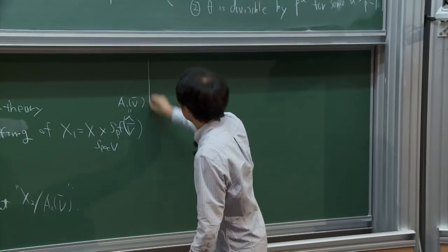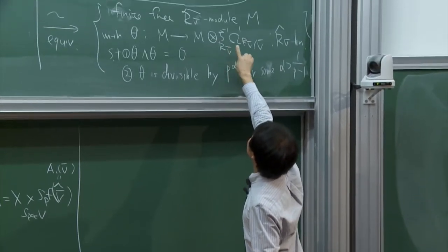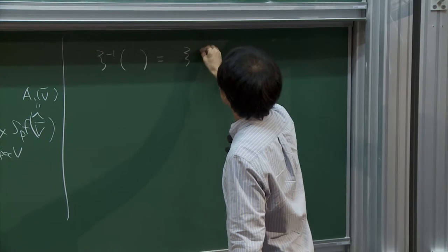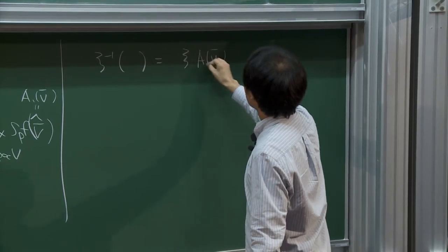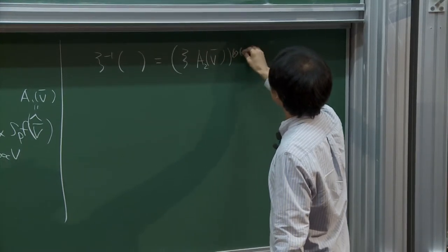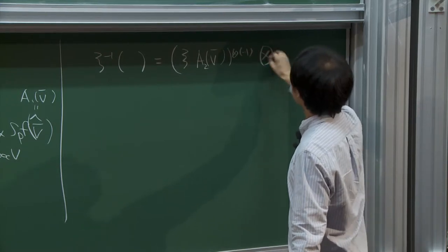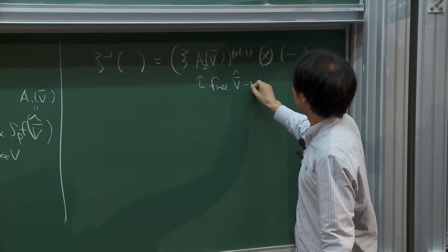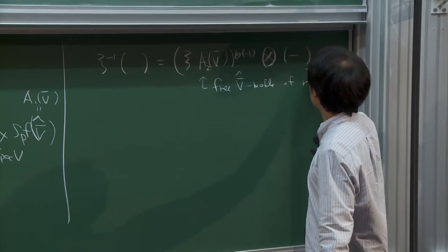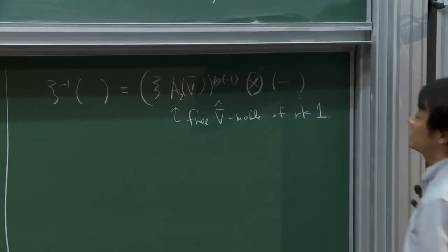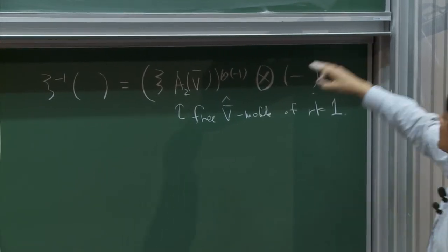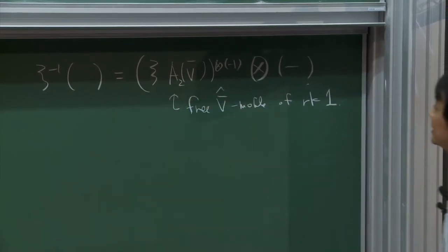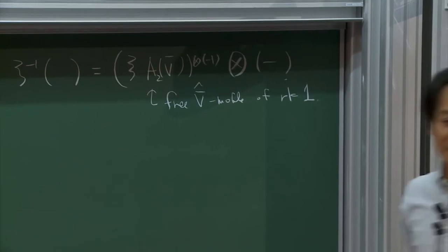I forgot to give a definition of ξ⁻¹. This is just the Tate twist — an inverse of ξ transferred to something. This is a free V-bar-hat module of rank one, just a normalization, but there is no canonical choice of basis, so we have to write it as such.